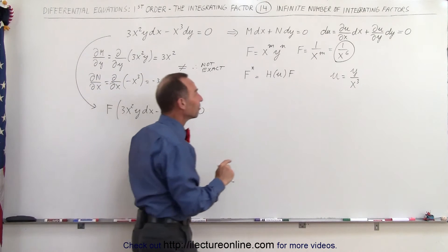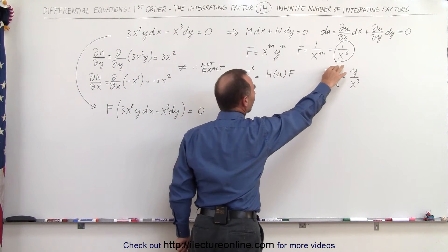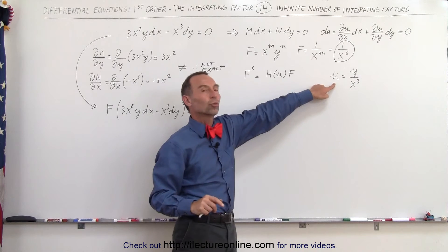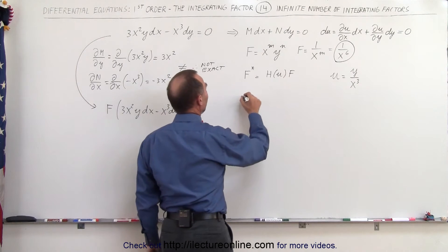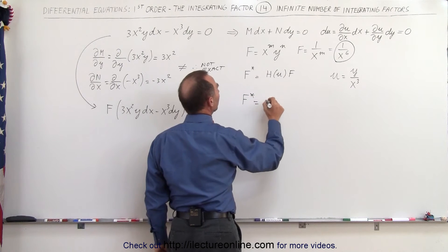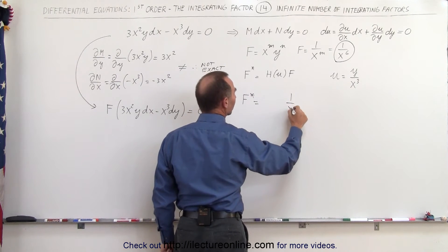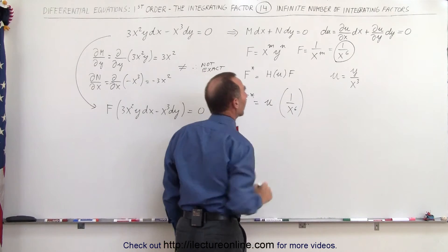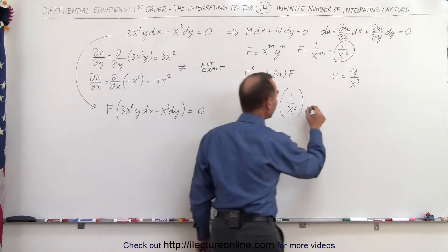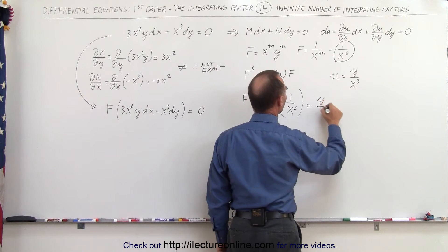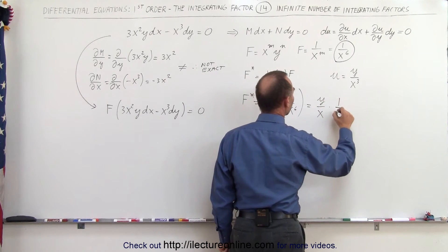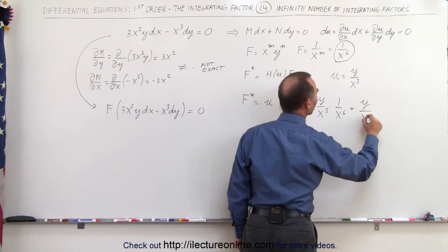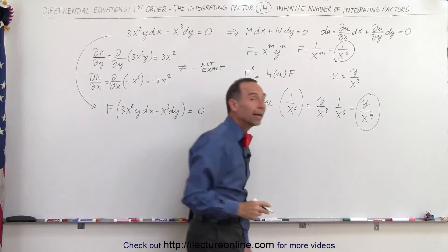We can find any other integrating factor by taking a given integrating factor and multiplying it times a function of u, the solution. In other words, a new integrating factor would be equal to taking the old integrating factor 1 over x to the sixth power and multiplying it times a function of u. If we simply multiply it times u, this would be equal to y over x cubed times 1 over x to the sixth, which gives us y divided by x to the ninth. So y over x to the ninth would be another integrating factor.